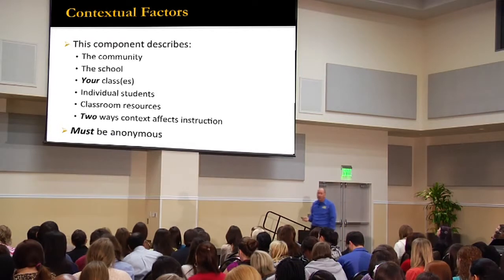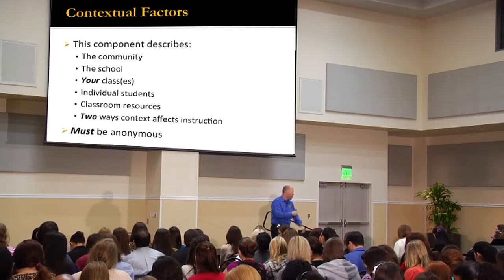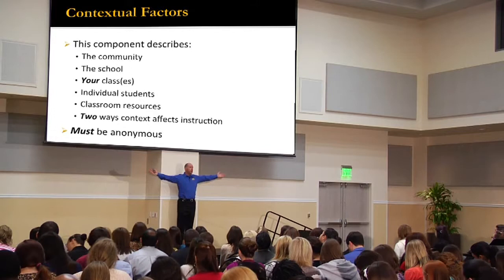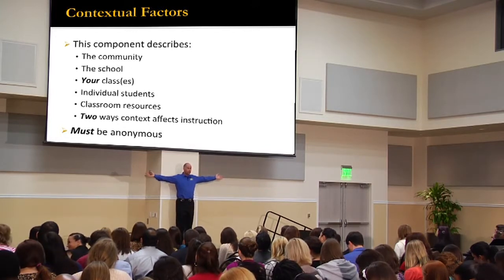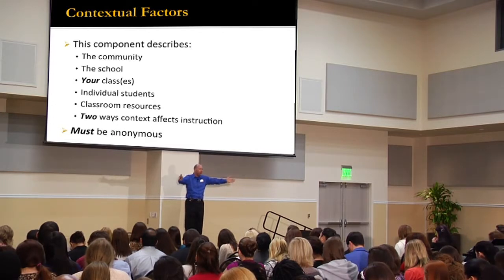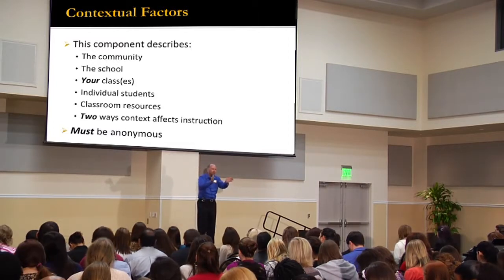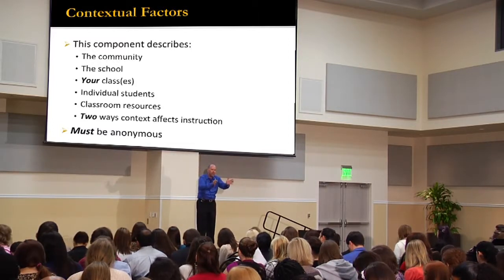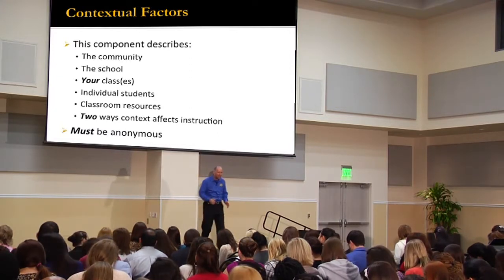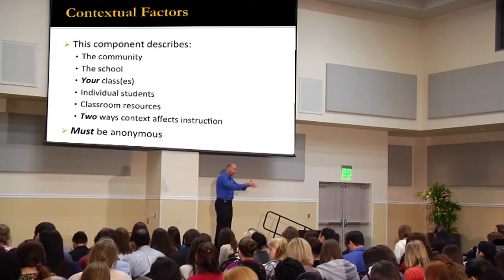This written component is going to include some of that context that you explore. Start with the big picture — describe your community. Then take a step in and describe the school, including demographics and number of students. Then take a step in and describe the students you work with — their demographics, class size, how many classes. Then take another step in and talk about the individual unique learning needs of individual students.